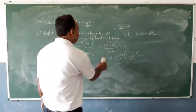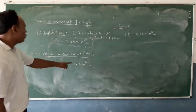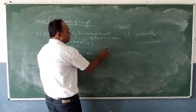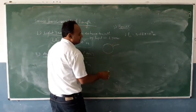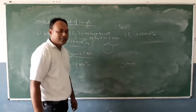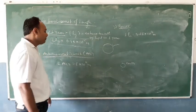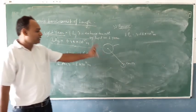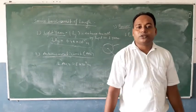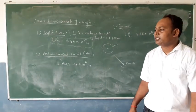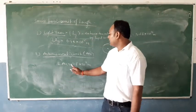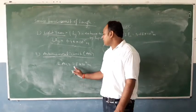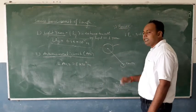The second unit is the Astronomical Unit (AU). The astronomical unit is defined as the average distance between the Sun and the Earth. Its value is approximately 1.5 × 10¹¹ meters.